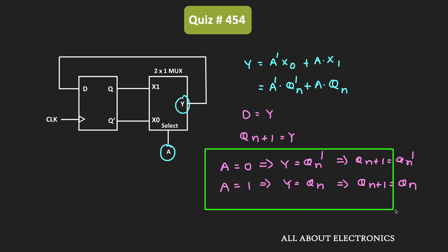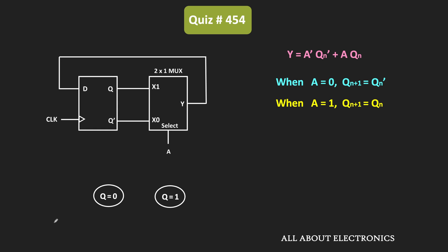Using this information, let us draw a state diagram of this given circuit. For this D flip-flop, we have only two possible outputs: Q equal to 0 and Q equal to 1. Whenever A is 0, the next state will be the complement of the present state. So if the flip-flop is in state Q=0 and the input A is 0, its output will become 1. Likewise, if the output is 1 and A is 0, in the next state its output will get complemented and become 0.